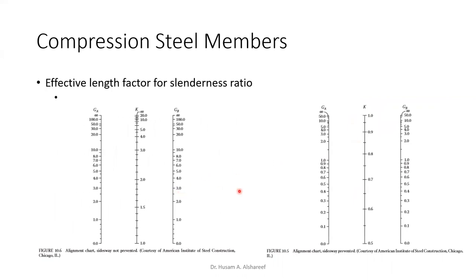As for the alignment chart, we have two types. The first type is sideways not prevented, and the other type is sideways prevented. If your column is prevented from swaying, you should use the sideways-prevented side. Looking at the values: for the not-prevented side, K starts from one and goes all the way to infinity, whereas for the prevented side, it starts from 0.5 and ends at one. That's the key difference.